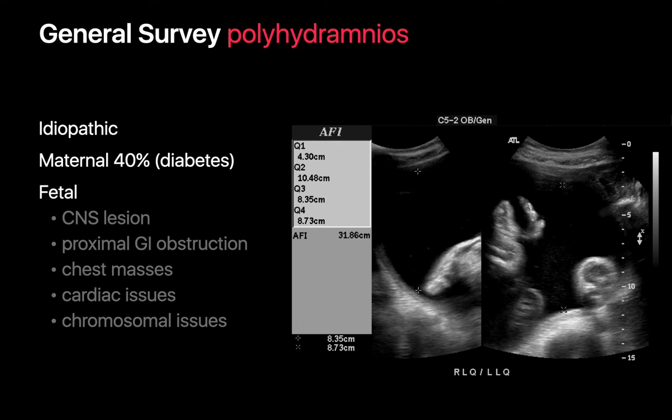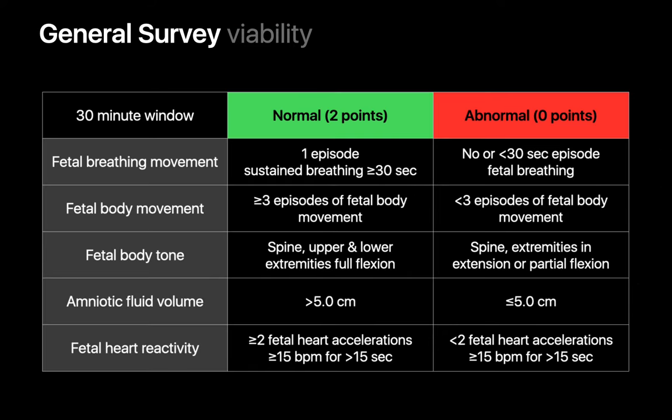We wrap up the general survey with an assessment of fetal viability using the biophysical profile. This tool assesses five parameters over a 30-minute window: fetal breathing movements, fetal body movements, fetal body tone, amniotic fluid volume, and fetal heart activity or reactivity. Each parameter is scored on a two-point scale and then totaled; scores of eight and above are usually considered normal.